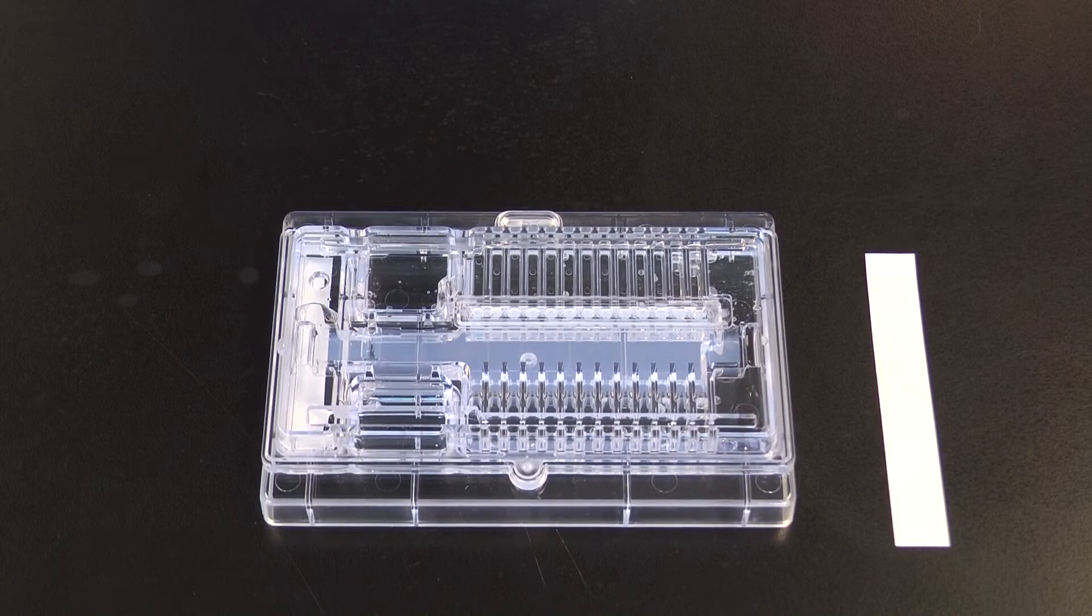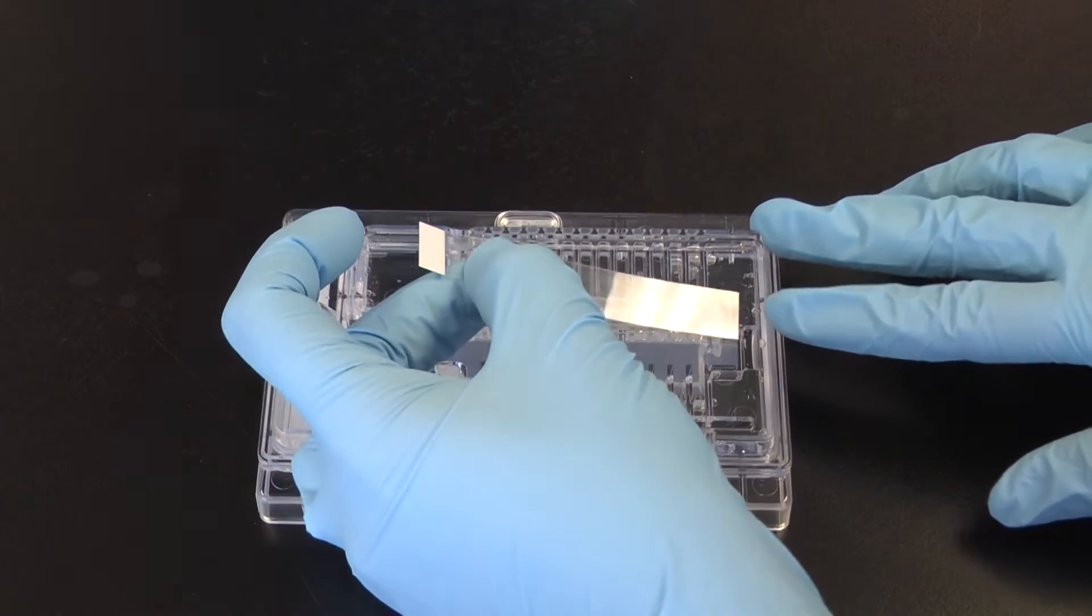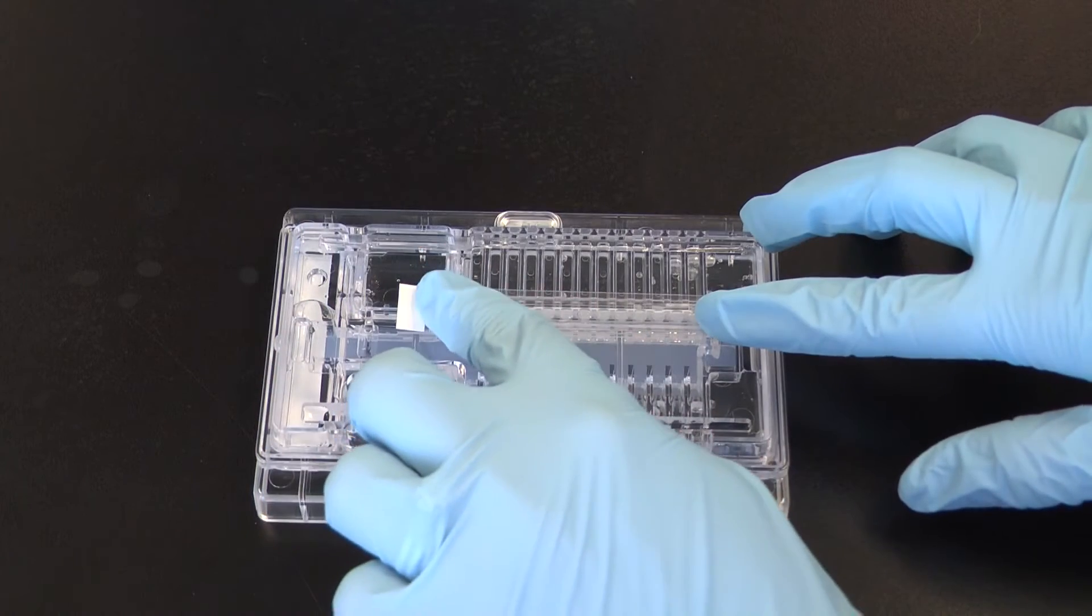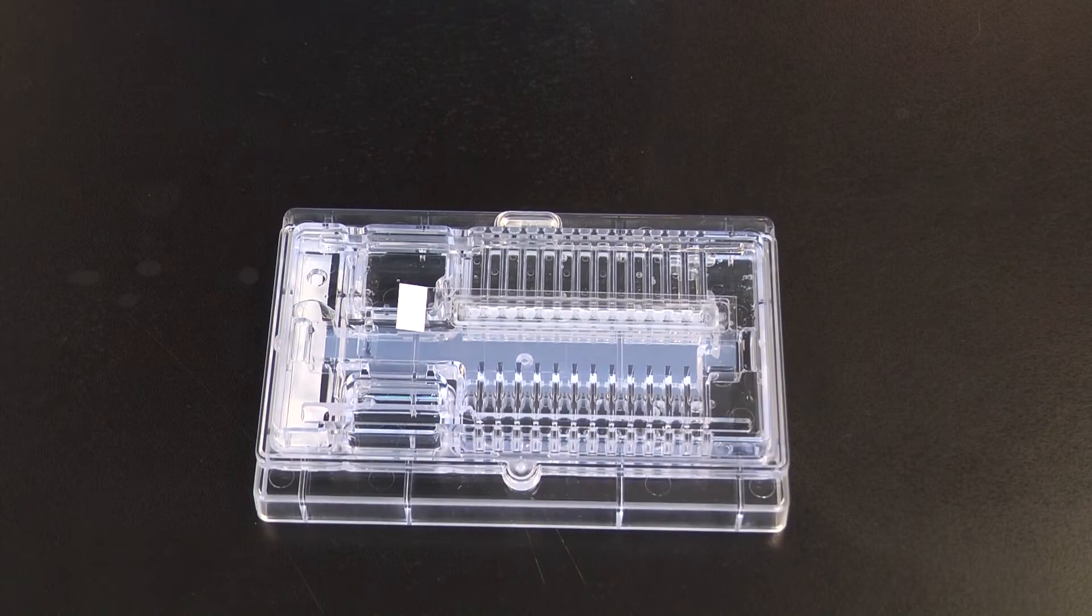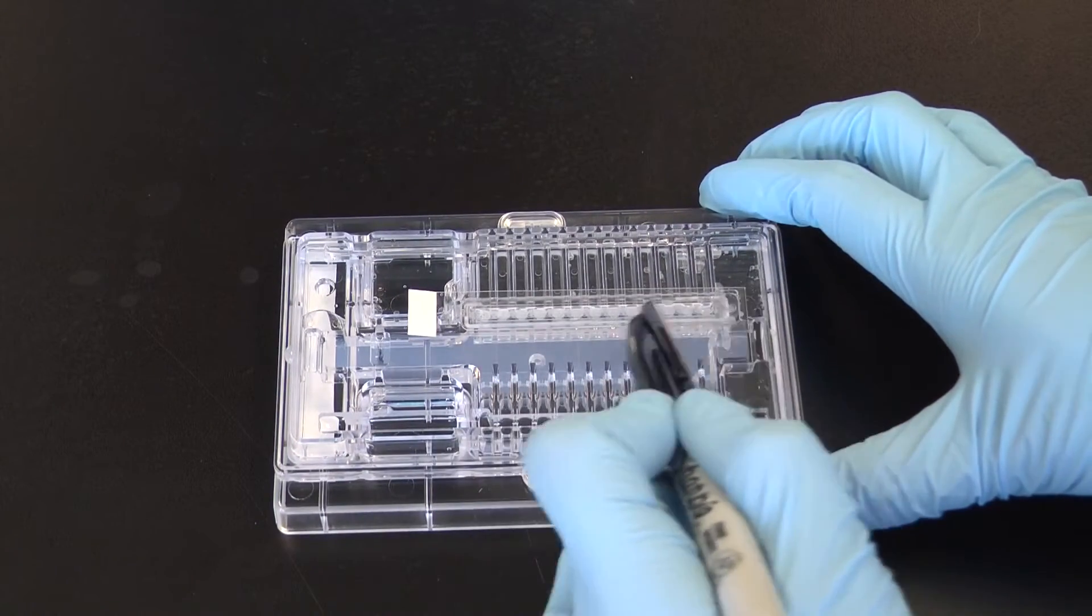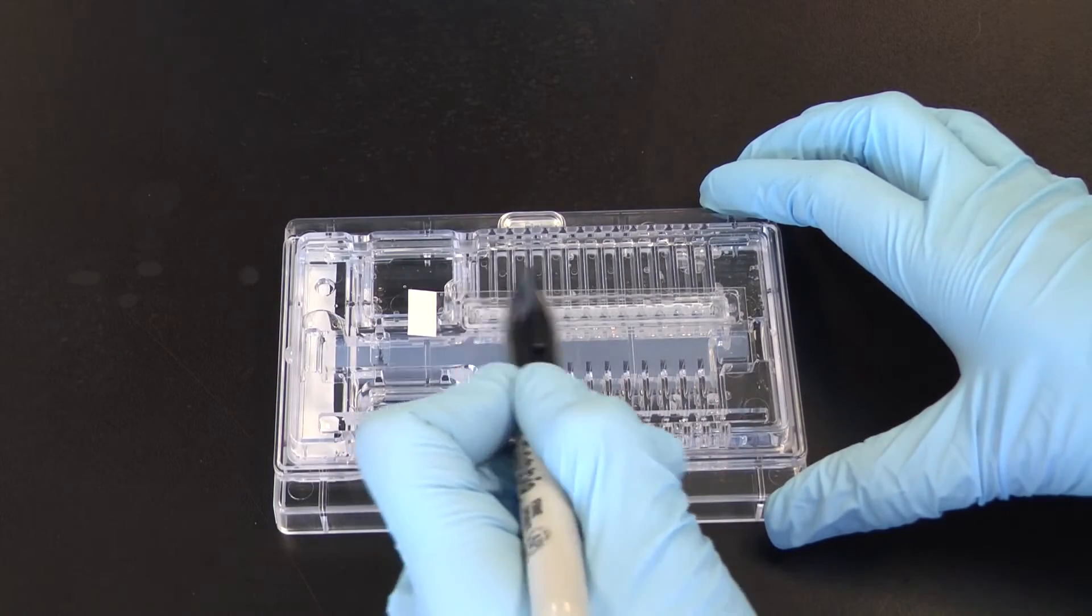Seal elution modules with the pressure sensitive tape provided. Take care not to obstruct the lower electrode port with tape. Firmly rub the tape with a finger, then secure the seal using the back end of a sharpie or similar object. It is important to ensure a complete seal on the elution ports.